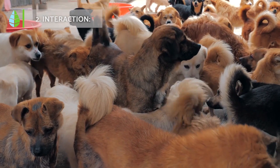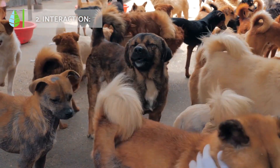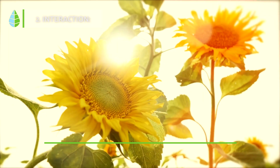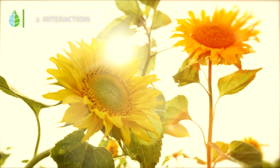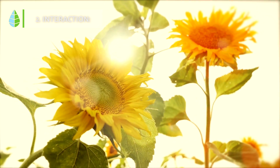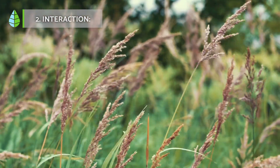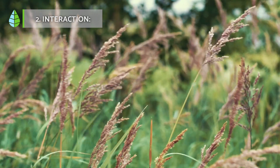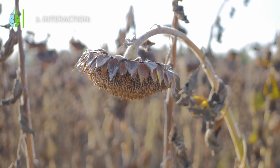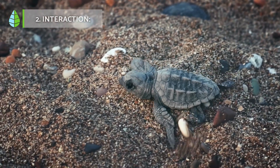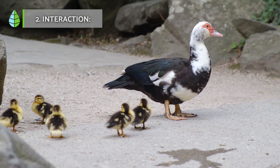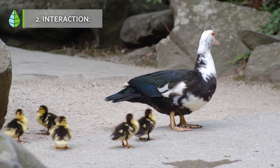Interaction. The vital function of interaction allows living beings to receive information from their environment and respond to it for survival. In plants, this function is based on their response to chemical stimuli. They possess complex chemical and physical mechanisms in the roots, stems, and leaves to receive and interpret these signals. For example, plants close their stomata when faced with water stress or a lack of water, in order to avoid drying out. In animals, the interaction function involves sensory organs and a complex nervous system, enabling them to communicate with other living beings and respond to environmental changes.